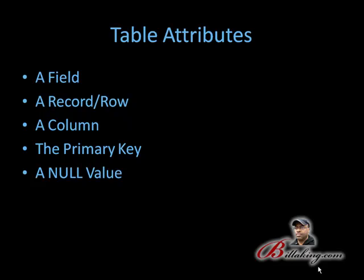A primary key is a column that makes each row of data unique. For example, most people create a field called ID or record ID, make it the primary key, and set it to auto-increment. That way, every time an entry is added, the next record is auto-incremented to a new number. And then you have a null value, which represents a missing value within a field.